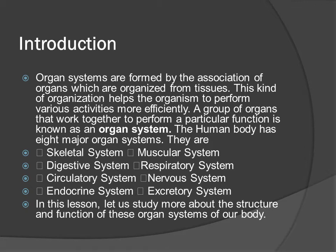The 8 major organ systems are: skeletal system, muscular system, digestive system, respiratory system, circulatory system, nervous system, endocrine system, and excretory system.